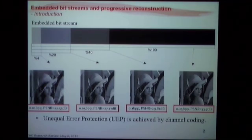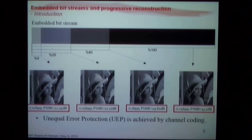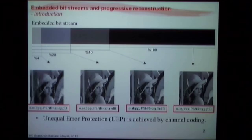As you receive more and more bits at the decoder — 20% and 40% — you basically refine the image. Every single successive bit gives you a refinement of the image. Also, these bits are unequal and should be unequally protected because the significance of bits are different. So unequal protection is usually the method used to transmit such bit streams over noisy channels, which is usually achieved by channel coding.